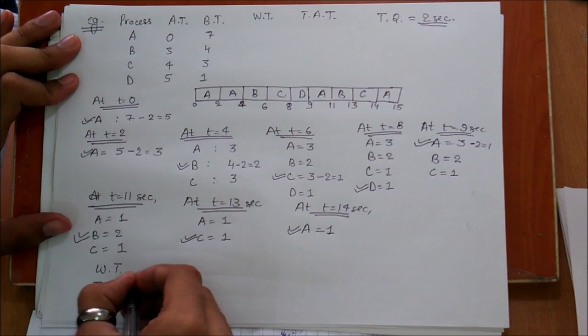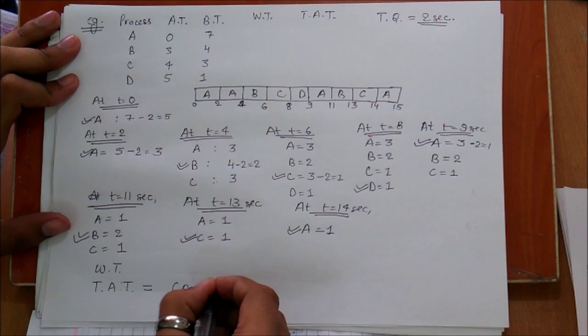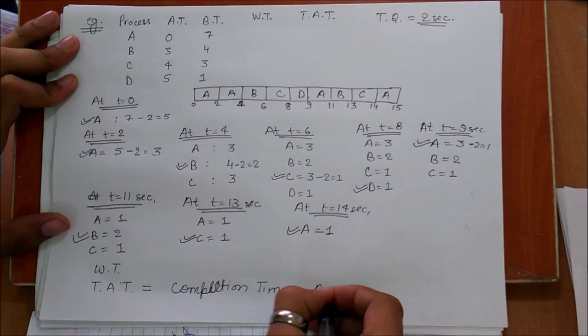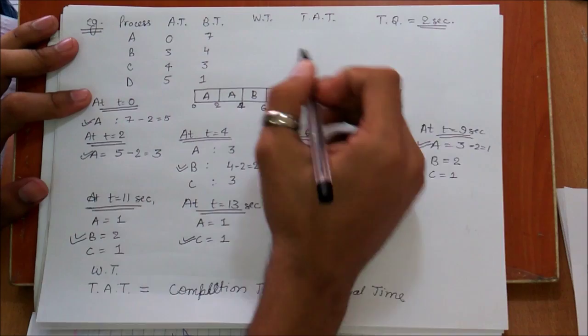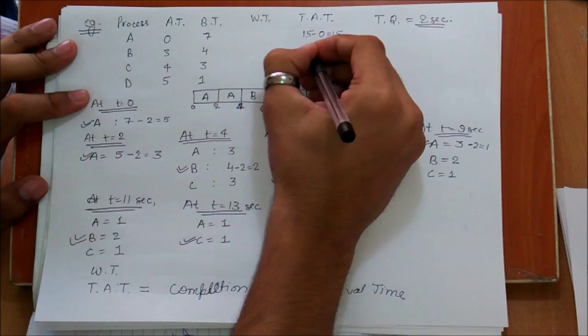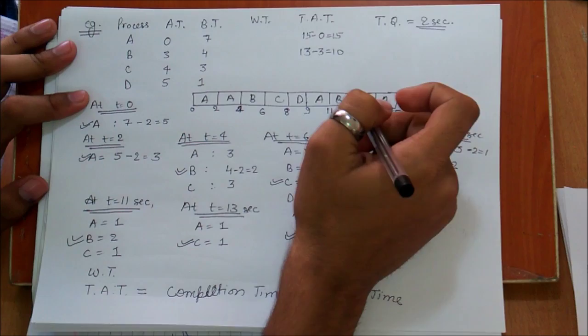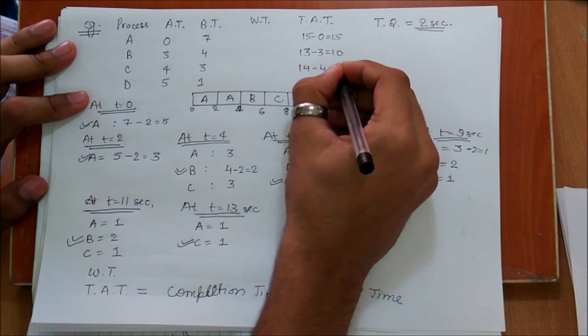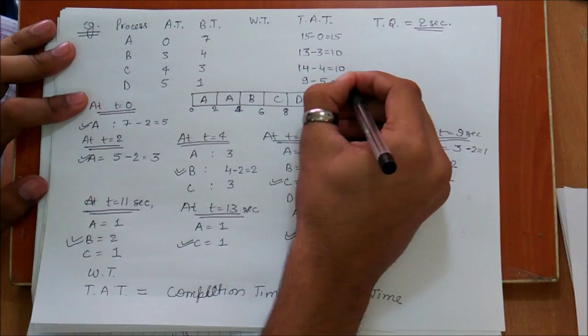Now we calculate the waiting time and the turnaround time. First, turnaround time is calculated by subtracting arrival time from completion time. The completion time of A is 15 and arrival time is 0, so turnaround time = 15. For B, completion time is 13 and arrival time is 3, so turnaround time = 10. For C, completion time is 14 and arrival time is 4, so turnaround time = 10. For D, it is 9−5 = 4.